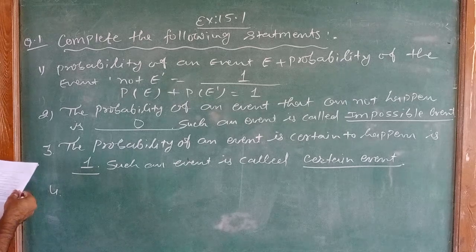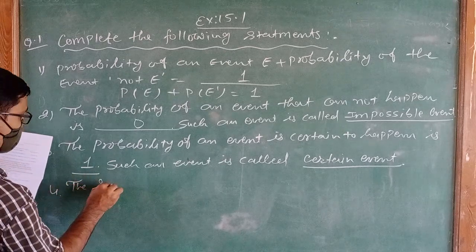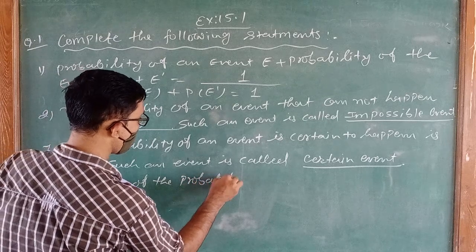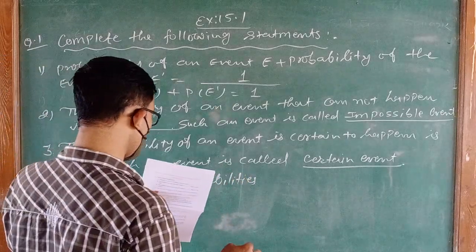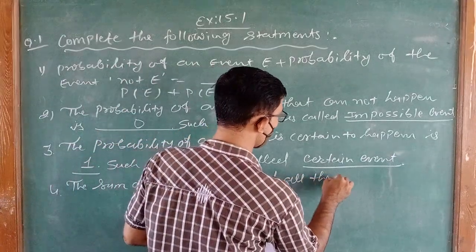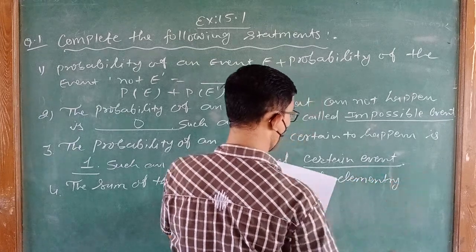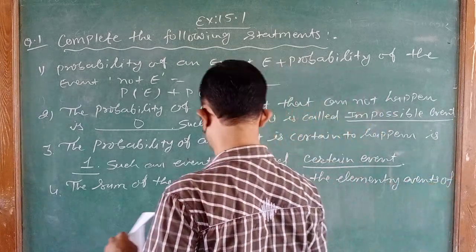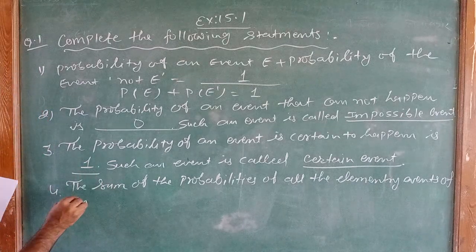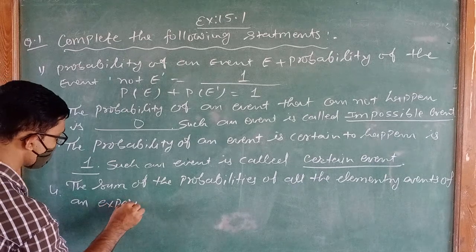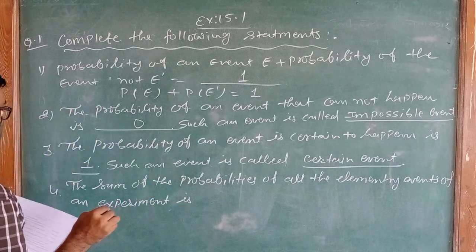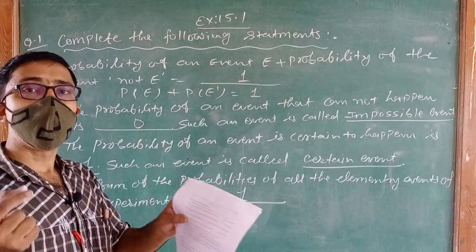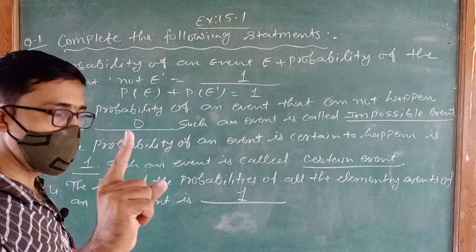Question number 4: The sum of the probabilities of all the elementary events of an experiment is 1. Meaning, if we sum up the probabilities of all elementary events, the sum will be 1.